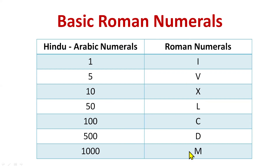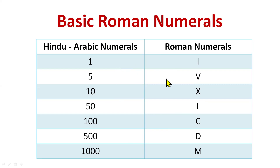And then M is left — that is 1000. So now I think you must have learned: 1 is I, 5 is V, 10 is X, 50 is L, 100 is C, and 1000 is M.